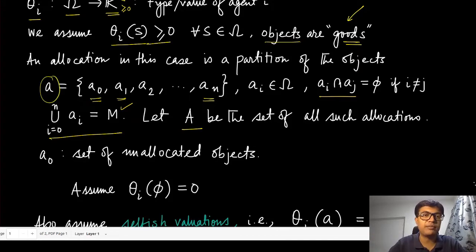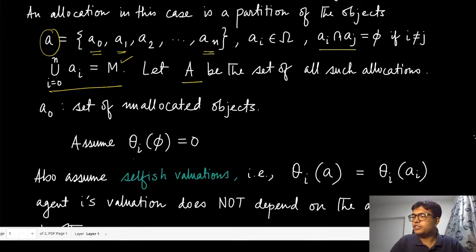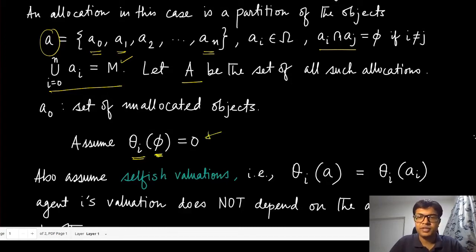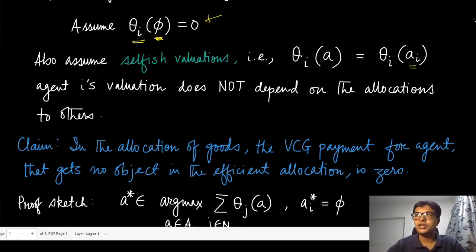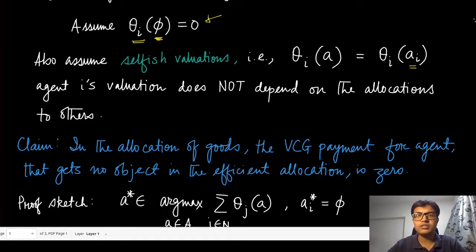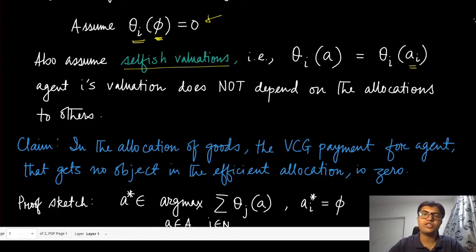We also assume that if a specific agent does not get any object — its allocated partition is the empty set — then its valuation is zero. This is quite natural. Additionally, we assume that valuations are selfish, meaning there is no dependency across agents. If agent i gets allocation a_i, its valuation only depends on a_i. We exclude cases where, for example, two friends' valuations depend on each other's allocations. We focus solely on selfish valuations.